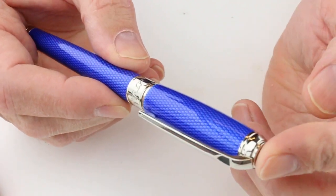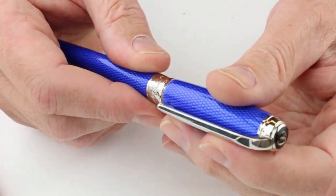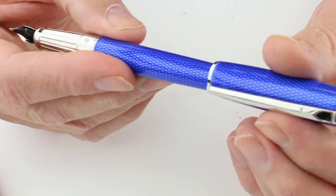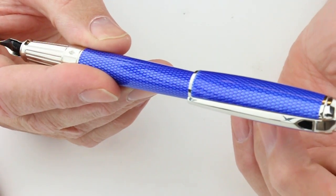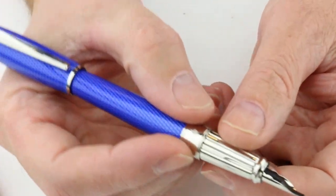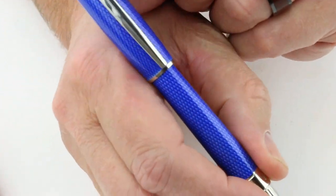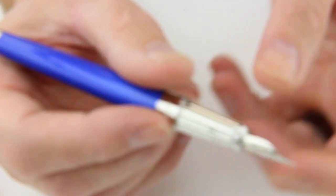When the cap snaps on, it actually has a little click as it snaps on. It will also click on the end of the barrel of the pen if you'd like to post as well. It does feel a little heavy on the end of the pen for my liking. I probably would write without it posted.